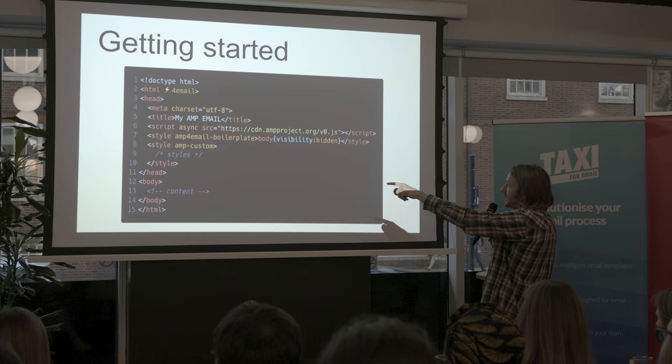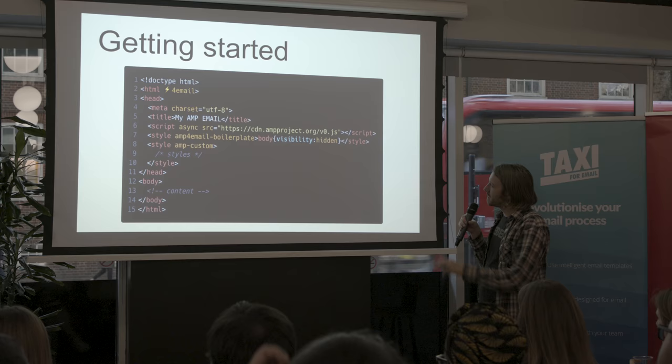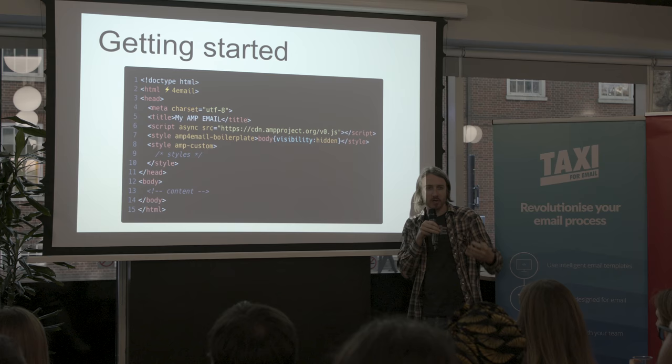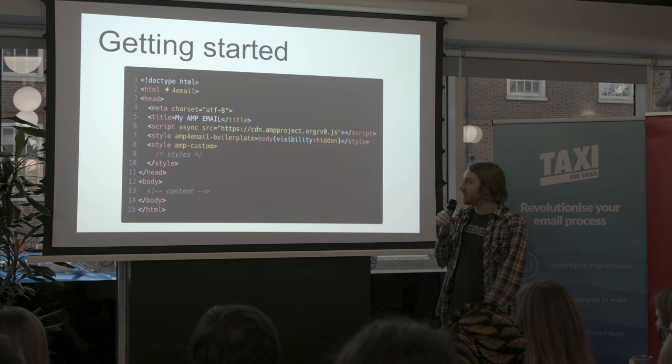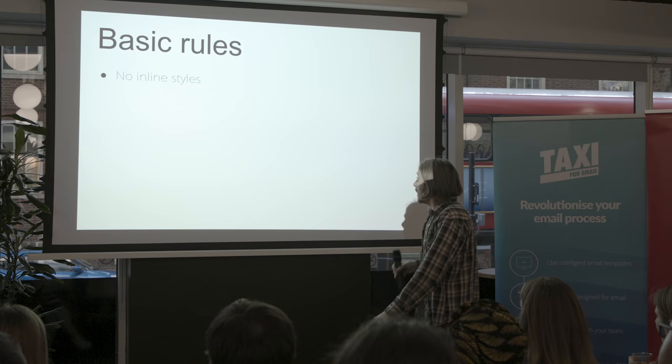Next up, we've got two style blocks. The first is the AMP for email boilerplate — it just goes in as is, body visibility hidden. That is very strict in the validation — you can't put any spaces in it. If you're using a build system that prettifies your code and puts new lines in, that will fail the validation. It has to be exactly like that. Then you've got the AMP custom style, which is just your CSS, and then your content in the body as normal.